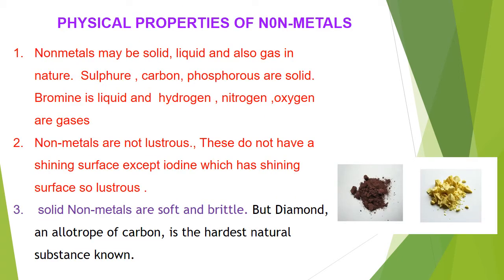Physical properties of non-metals: non-metals may be found in solid, liquid, and gas states. Sulfur, carbon, and phosphorus are in solid state. Bromine is liquid, and hydrogen, nitrogen, and oxygen are gases. So non-metals are found in all possible states — solid, liquid, and gas.